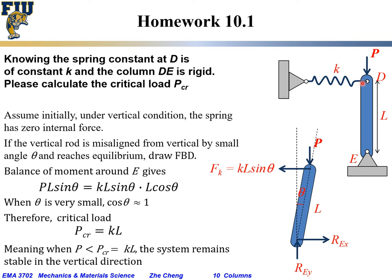Assuming initially the spring has zero initial internal force — neither tension nor compression. If the vertical rod is misaligned slightly from the vertical location, let's say the rotation angle is a small angle theta, theta is very very small, and let's assume it reaches equilibrium. Then we can draw the FBD, a free body diagram. At the D end we have the vertical external force going down, while at the E end we have the reaction force going up.